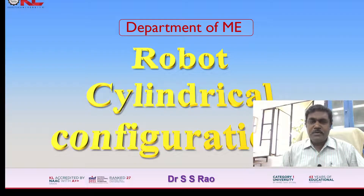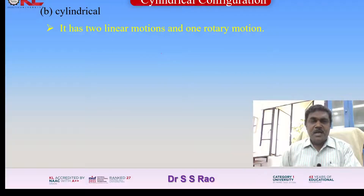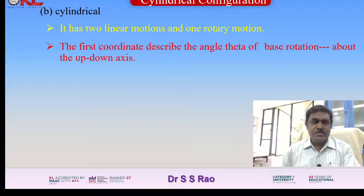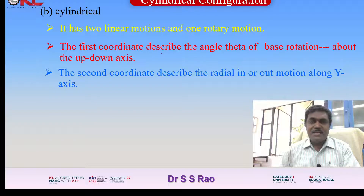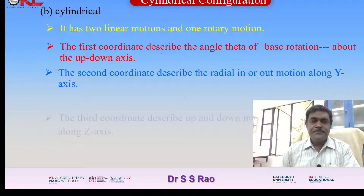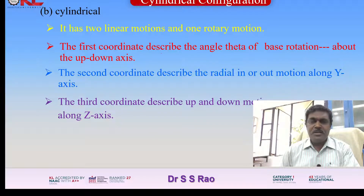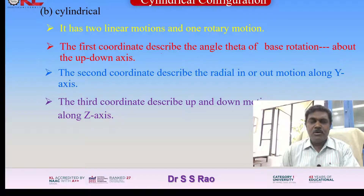In this video, I am going to explain the robot cylindrical configurations. It has two linear motions and one rotary motion. The first coordinate describes the angle theta of base rotation about the vertical axis. The second coordinate describes the radial in or out motion along the y-axis, perpendicular to the vertical axis. The third coordinate describes up and down motion along the z-axis. With the help of these three motions, we can control the work envelope workspace in a cylindrical shape — that's why it is called a cylindrical configuration.